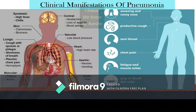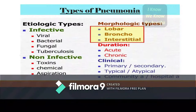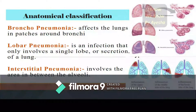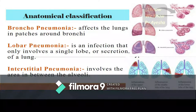The types of pneumonia vary depending upon causative factors. It can be classified etiologically as infective or non-infective pneumonia, morphologically and anatomically, by duration of disease, and by clinical classification. Anatomically, pneumonia can be classified as bronchopneumonia, where all the bronchi of the lung are affected; lobar pneumonia, where only the lobes of the lung are affected; and interstitial pneumonia, where the areas between the alveoli are affected.